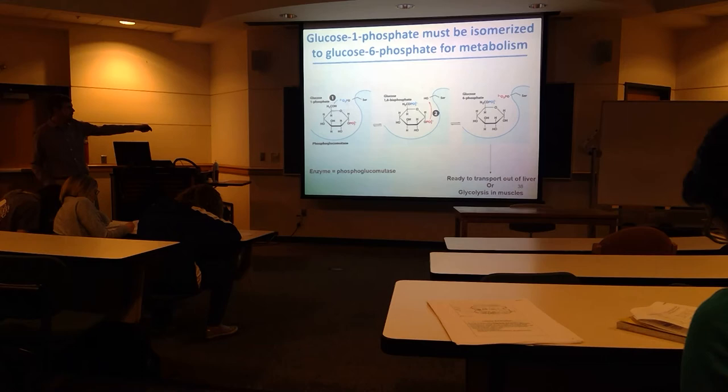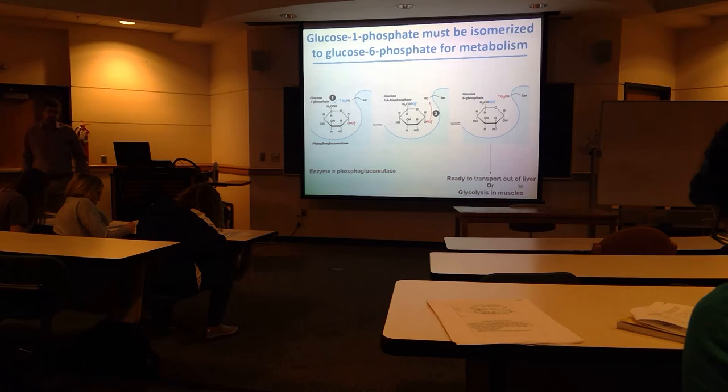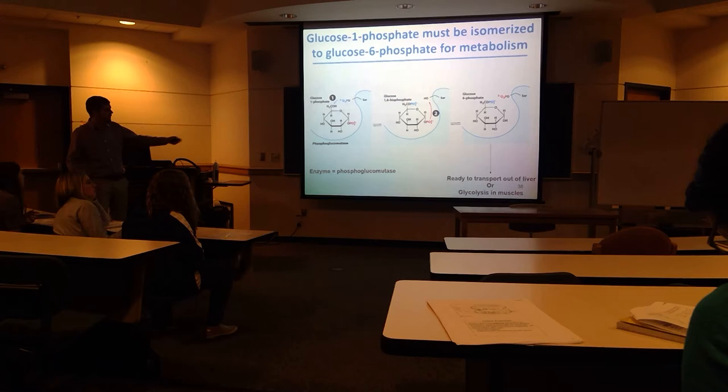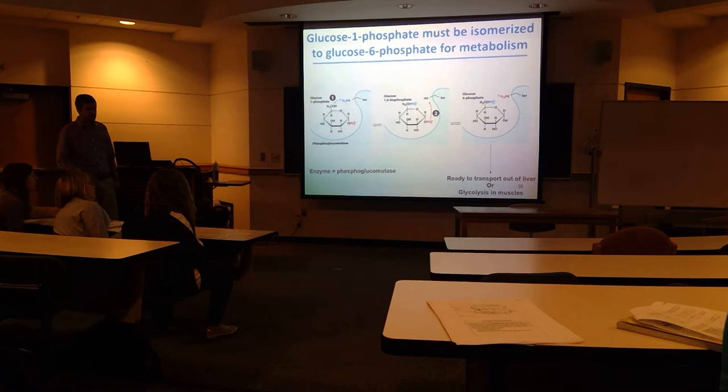Phosphoglucomutase works similarly to the mutase in glycolysis — there's an active site serine that is pre-phosphorylated. Glucose-1-phosphate binds in the active site, phosphate gets transferred to the first position giving an intermediate of glucose-1,6-bisphosphate, and then the phosphate at the first position is lost.